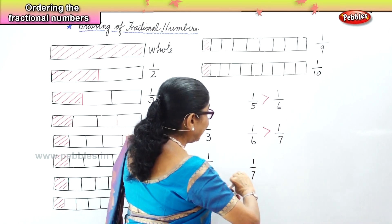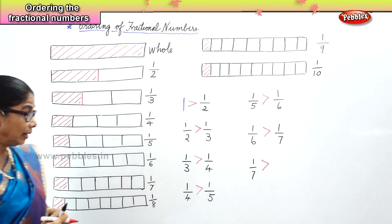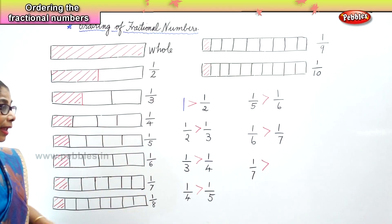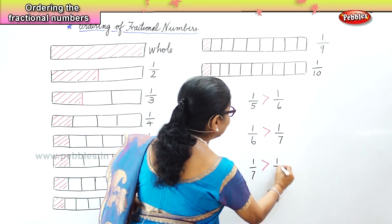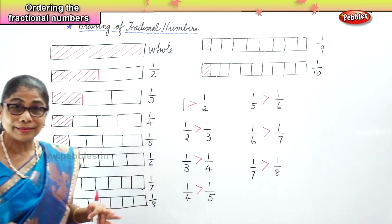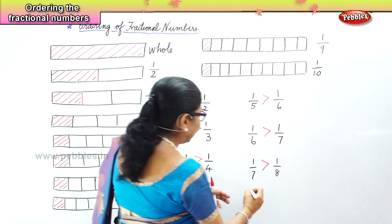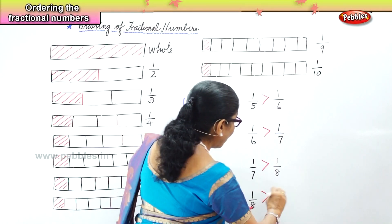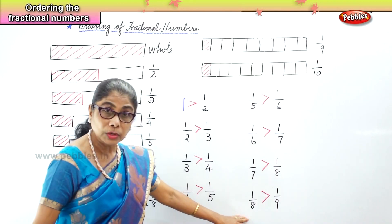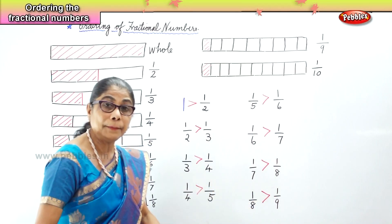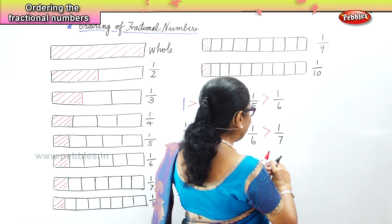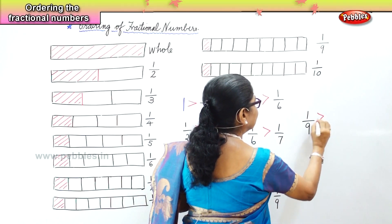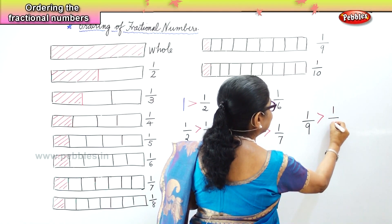One by seven is bigger than or greater than one by eight, because the whole is divided into seven parts versus eight parts. So one by eight is smaller than one by seven. One by eight is greater than one by nine — the same whole divided into eight parts versus nine parts. And finally, one by nine is certainly bigger than one by ten.